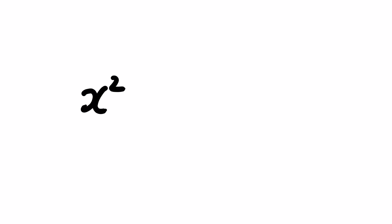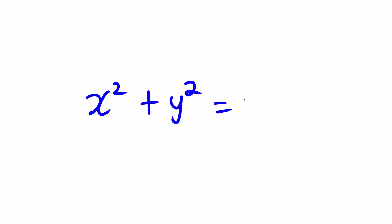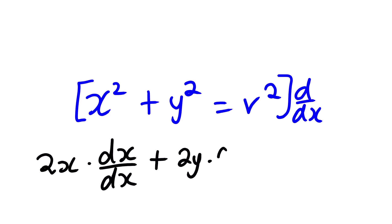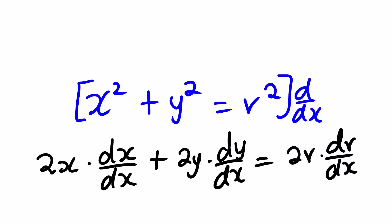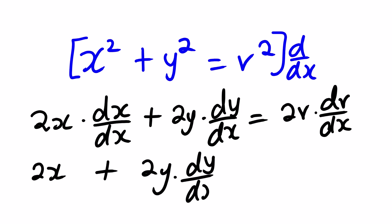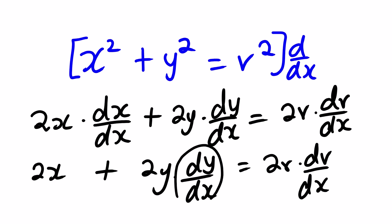Suppose you are given this equation and you want to find the derivative of it with respect to x. The derivative will be: the derivative of x squared is 2x multiplied by dx over dx, plus 2y multiplied by dy over dx, equals 2r multiplied by dr over dx. Since dx over dx equals 1, we get 2x plus 2y·dy/dx. Whenever you derive a different variable from the one you are differentiating with respect to, it is important to include that chain rule notation.